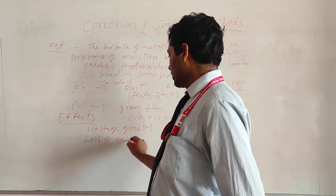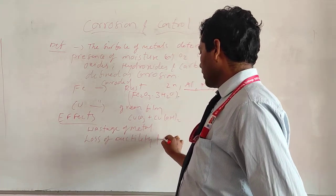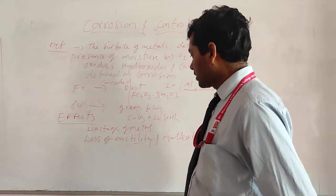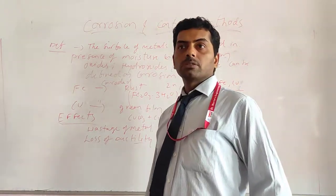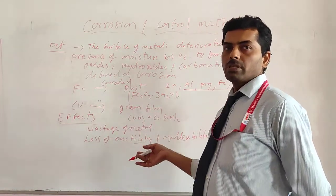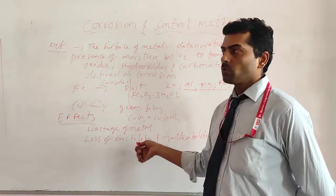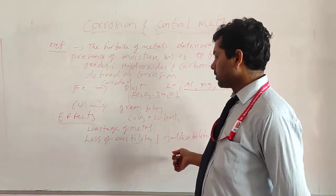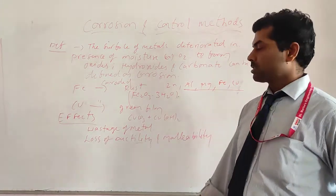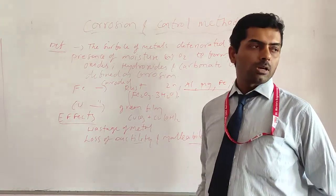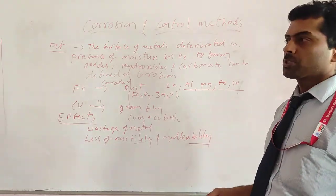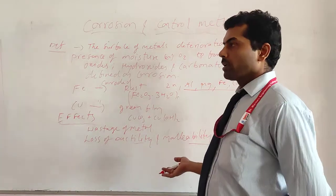There is loss of ductility and malleability. This means the metals cannot maintain good quality. Ductility means the conversion of metals into thin sheets — when there is quality reduction, the metal cannot be converted into thin sheets. Malleability means the metal cannot be converted into different shapes. So we are losing the quality of the metals.